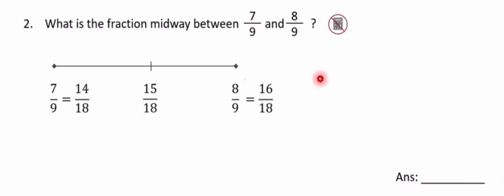So 15 over 18, let's proceed to simplify the answer. Divide by 3 for both, it will give you 5 over 6. I'll move on to the next question.